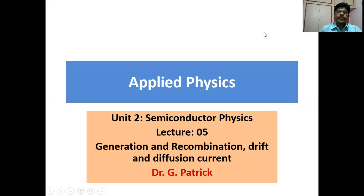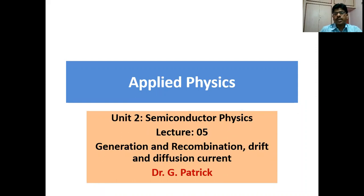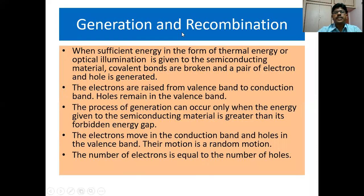In this lecture we are going to study about generation and recombination, drift and diffusion currents. This is lecture 5 of unit 2 semiconductor physics. First we shall see what is generation and recombination.